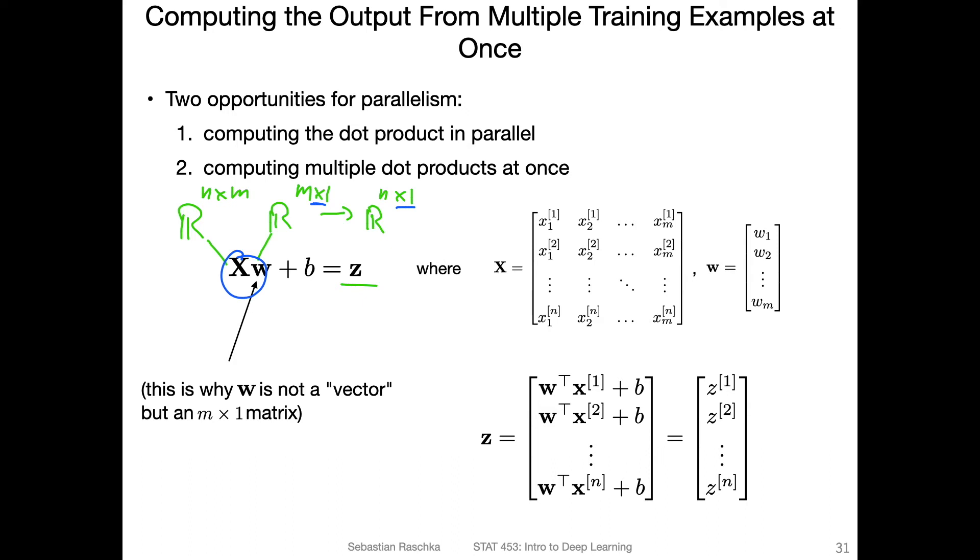Here's an example of computing the net input. This is then Z, Z would be a vector. We would be adding the B to every product. Each of those is a dot product, plus the bias unit, and that gives us the net input. The net input is also a vector for the training example. So we have n data points. I said training examples, but it would be more like the test data points in the context of the perceptron. In other algorithms, we can also do that with training examples. In the perceptron example, this would be technically the test examples because the perceptron is an online algorithm, it can only process one data point at a time.